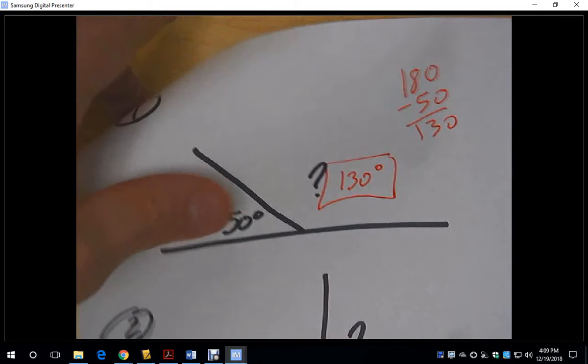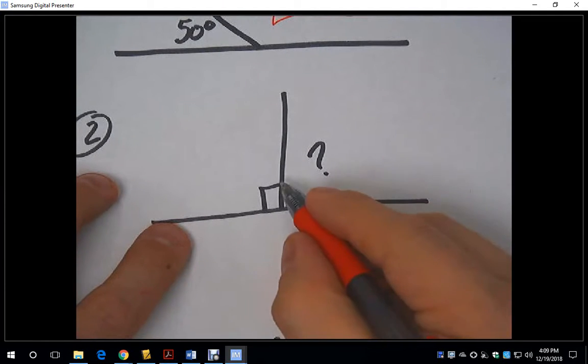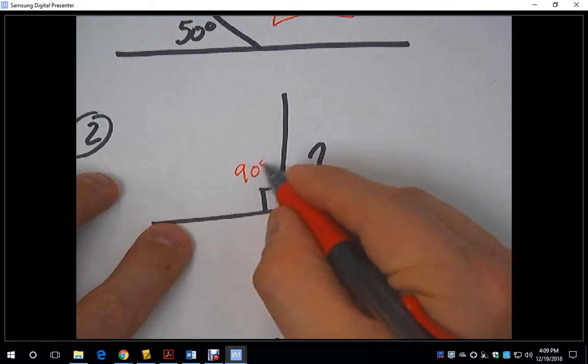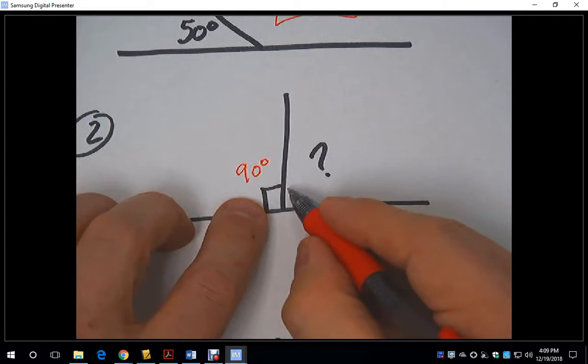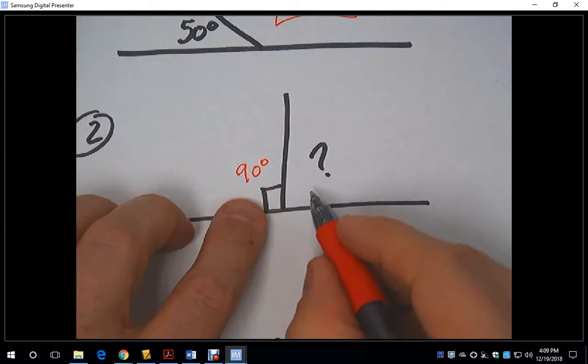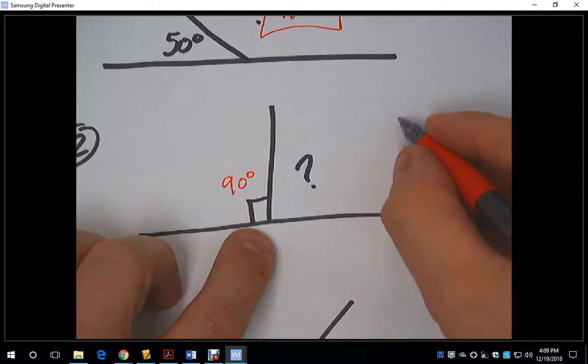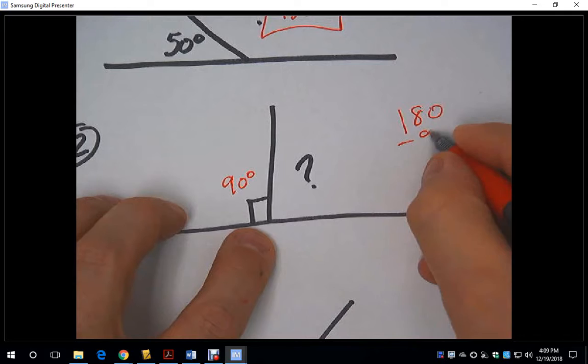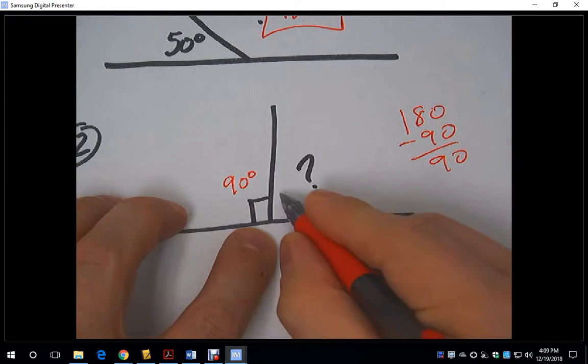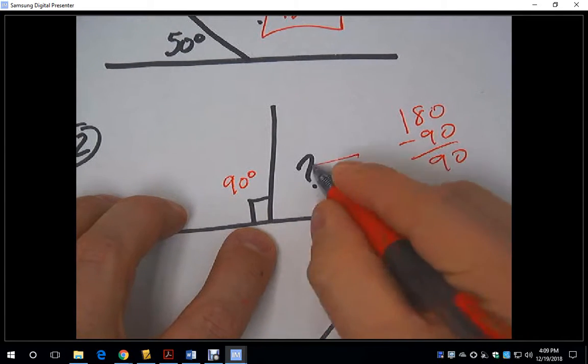Let's do another one. This little mark right here indicates that this angle is 90 degrees. If this angle is 90 degrees and we need to find the linear pair, the other angle, we again take 180 degrees, subtract 90 degrees, and get 90. The missing angle here for our linear pair is 90 degrees.